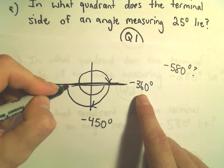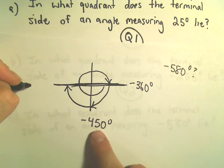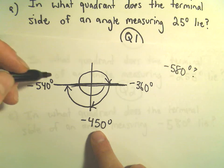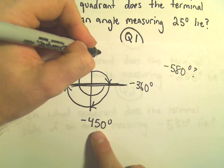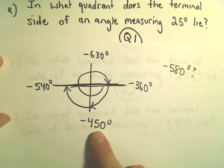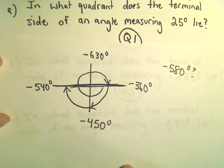If we go another 90 degrees, we'll be at negative 540 degrees. If we go another negative 90, we'll be at negative 630 degrees. Now we've gone too far.